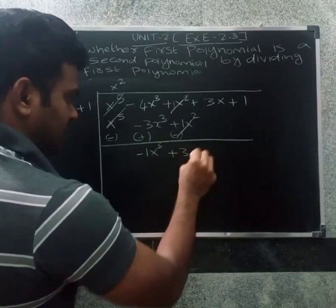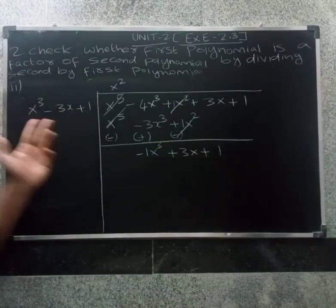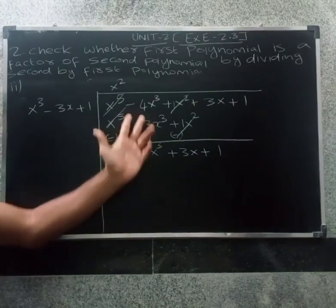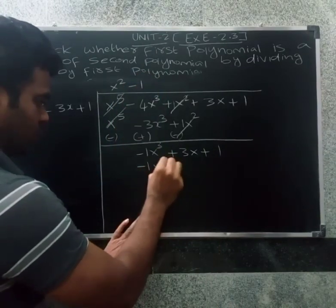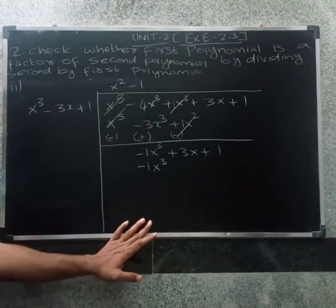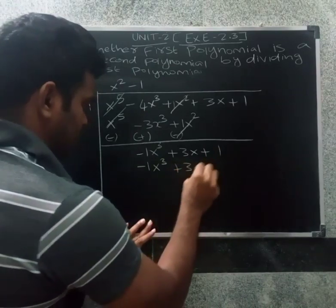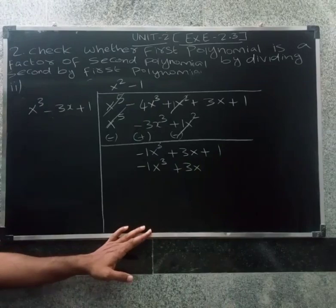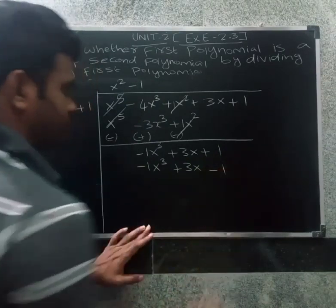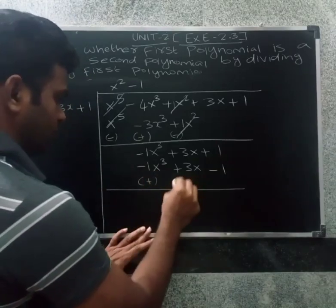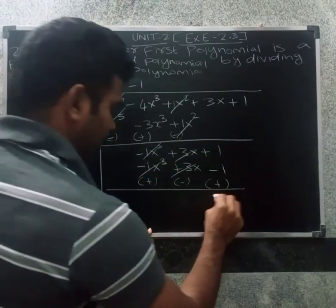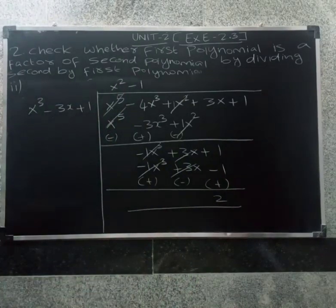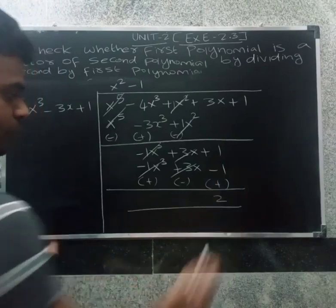So next is plus 3x plus 1. So next is x cubed. So minus 3x minus 1. So minus into minus will be plus. So plus 3x plus 1 minus 1. So plus 1 into minus 1 is minus. So minus; so minus again is plus. So this cancels. So this cancels. So this cancels. You have to cancel — you are ready to cancel. So this is okay.